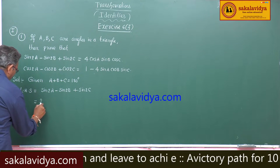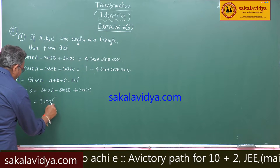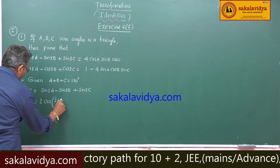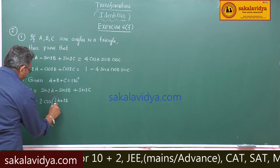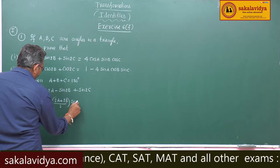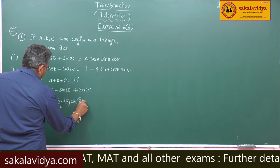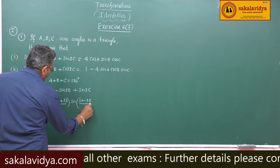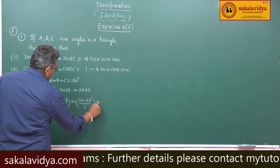So this we can write 2 cos of 2A plus 2B by 2 and sin of 2A minus 2B by 2, this is 2 sin C cos C.